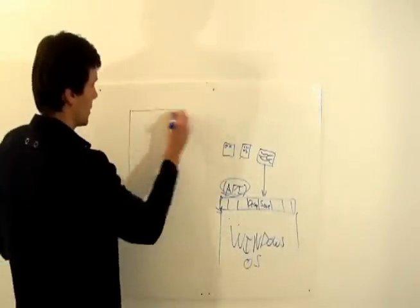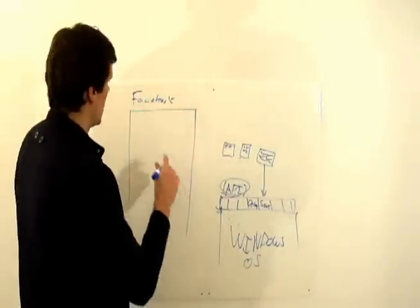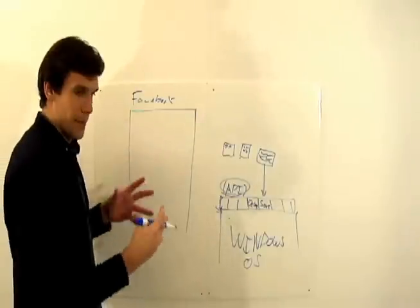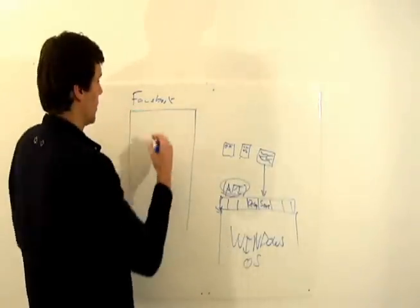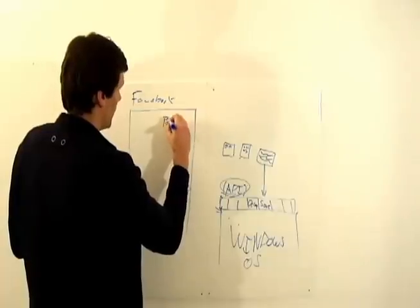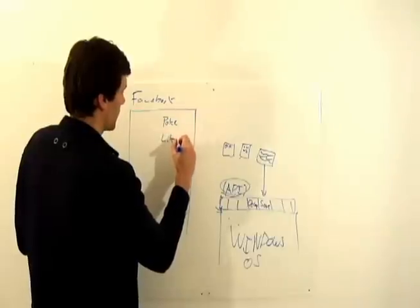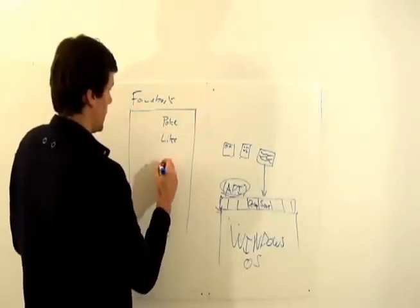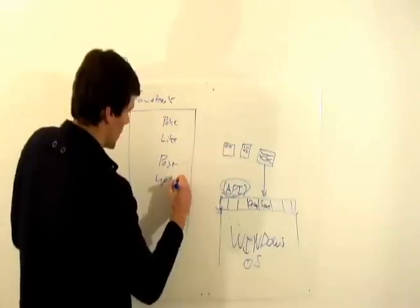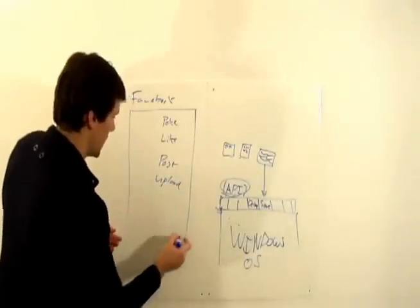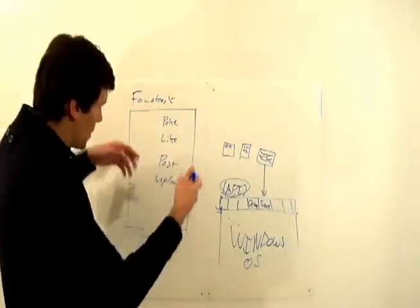Facebook, the big evil Facebook by Mark Zuckerberg, has lots of little programs that make up the larger program Facebook. A little program might look like a poke program, or a like program, or a post program, an upload program. So we have all these little programs that Facebook has that makes up Facebook.